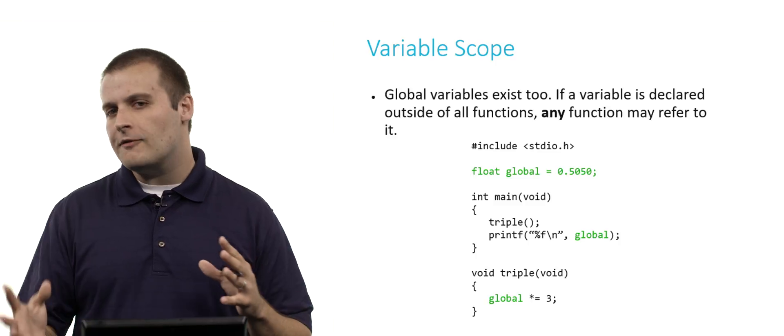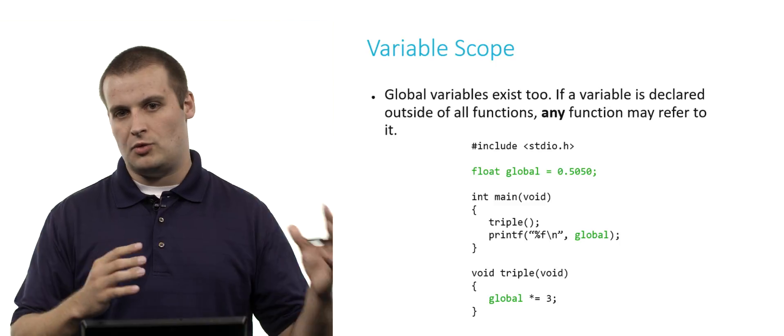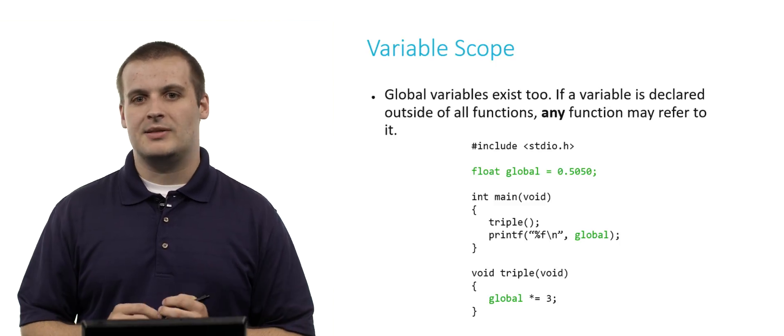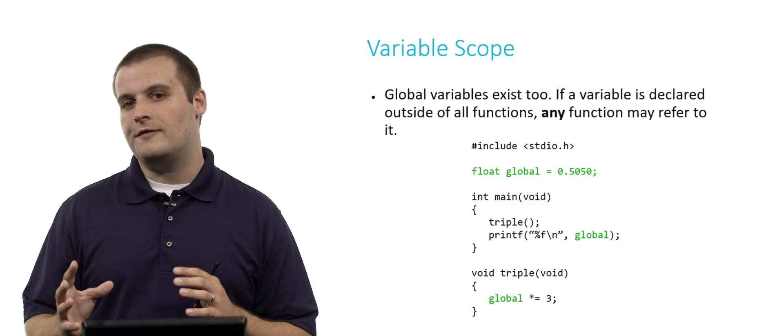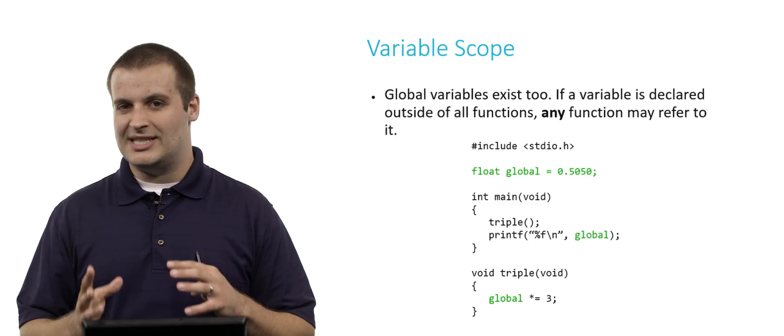So you've got to be careful when you're working with global variables. While they're very flexible in being able to pass information around so that every function can use it, it also can have some dangerous consequences if one function changes the value of a variable before you expect it to be changed.